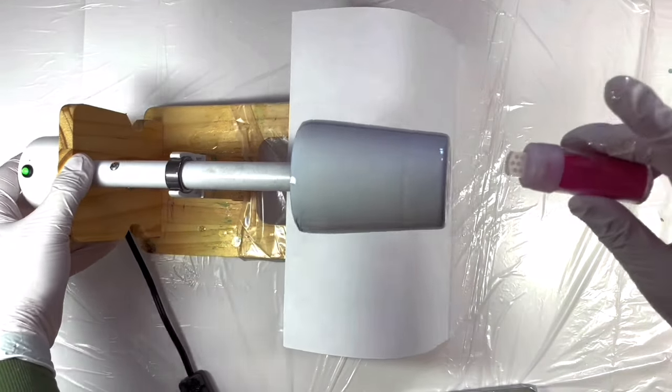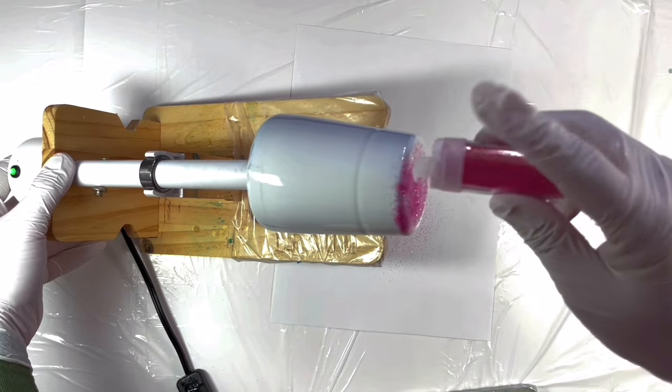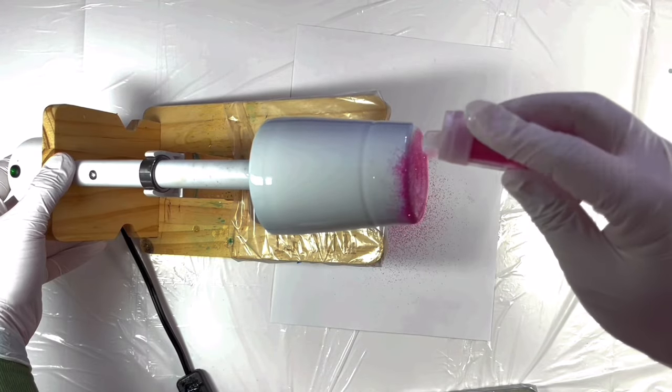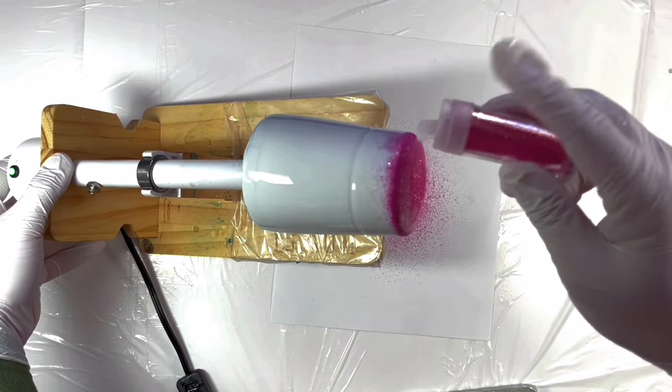Starting with the base, I am sprinkling the darkest shade here, the watermelon. Just tilt the machine a little bit so that you cover the entire base.